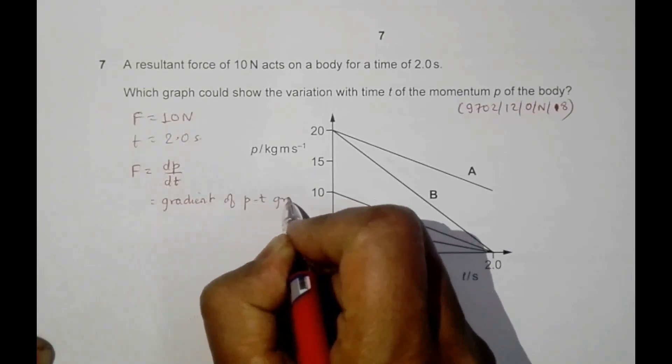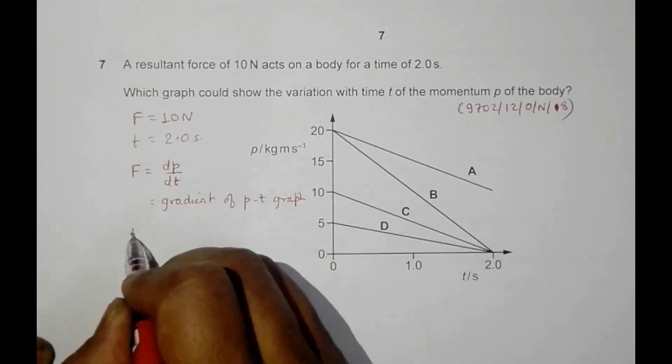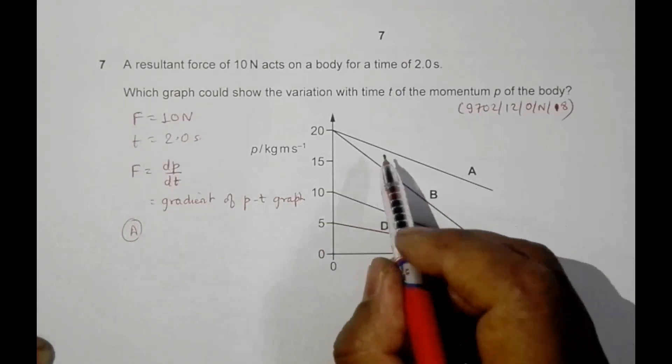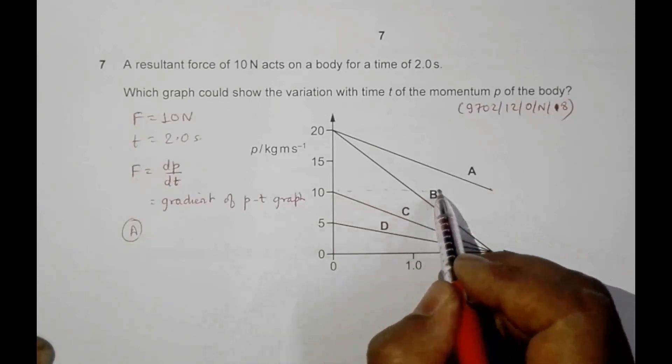So let's go for the choices. In choice number A, what we have is the gradient varies from 20 to about 10, so it is that the gradient is equal to 20 minus 10...